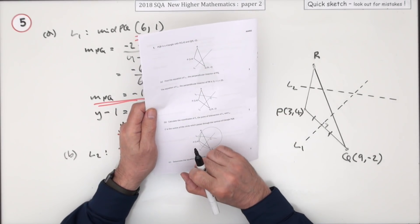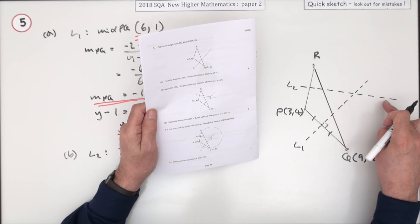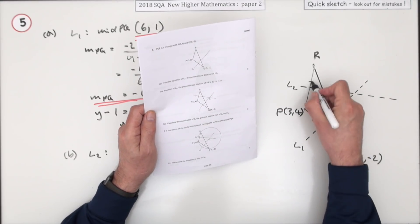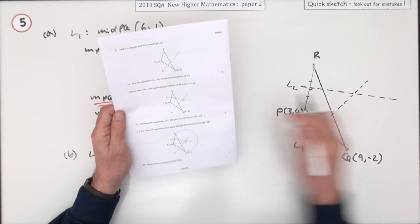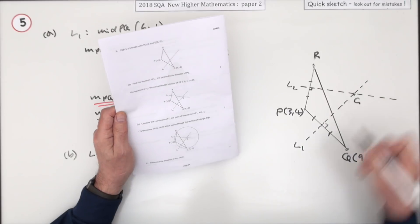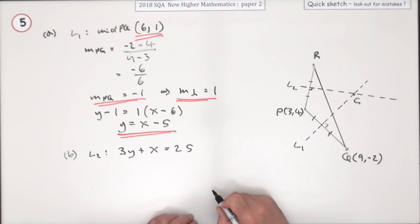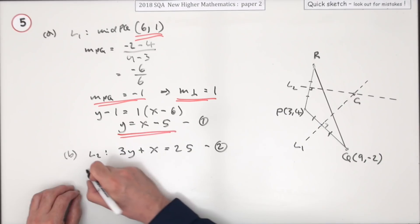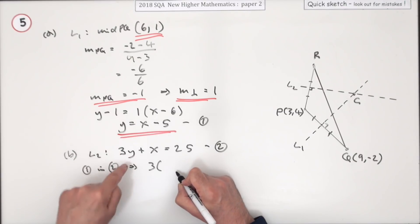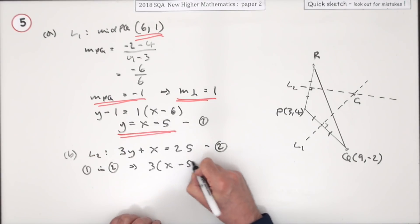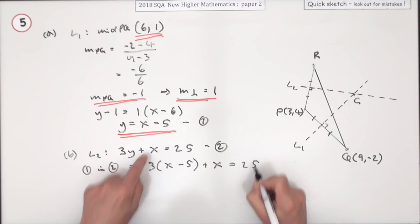Now they add another line for part B. The equation of this line L2, which is also a perpendicular bisector, is given by this. If those two lines intersect at point C, what are the coordinates of C? Well I'll call that 1 and I'll call that 2, so it's going to be intersection. Substitute the equations. I'm going to substitute 1 into 2, so number 2 is going to read 3 times, replacing the y with x minus 5, plus x equals 25.